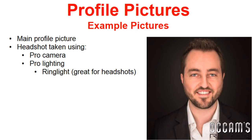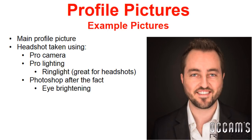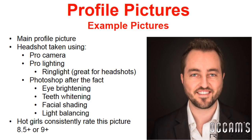A ring light is great for headshots — it's basically a circle of lights and the camera goes through the middle. You can see in my eyes there's a bunch of lights dancing around the perimeter. Photoshop was used after the fact for eye brightening — my eyes are not actually that blue — teeth whitening, and facial shading to even out the shades and balance the light. Hot girls consistently rate this picture above an 8.5 or 9, and some even rated it a 10.